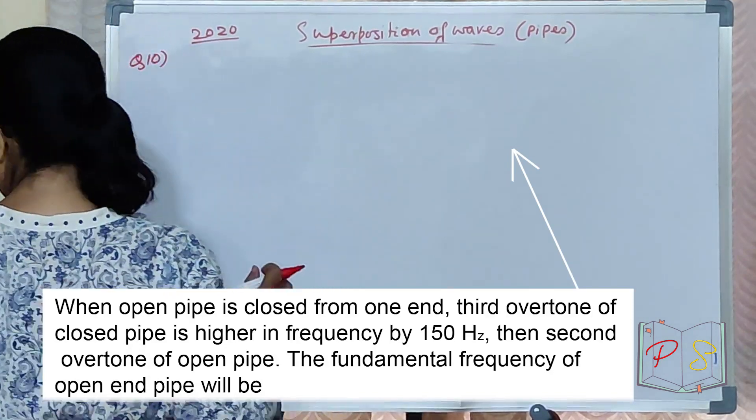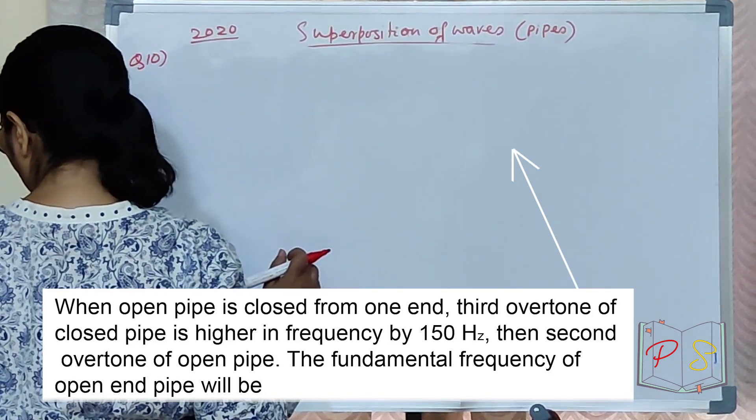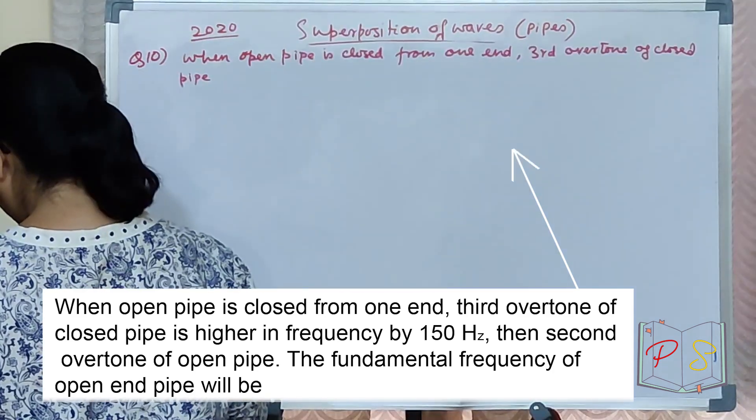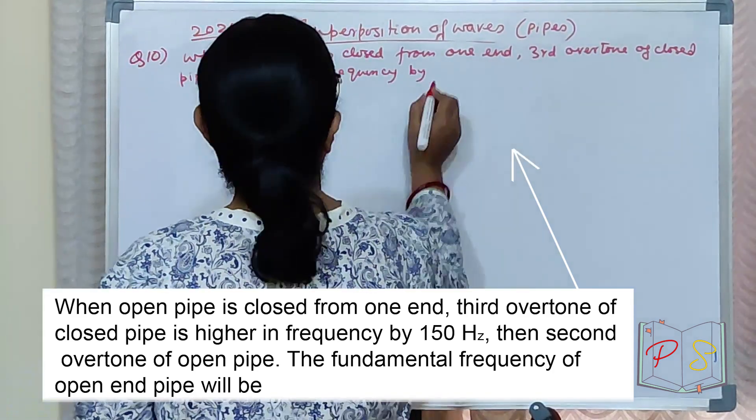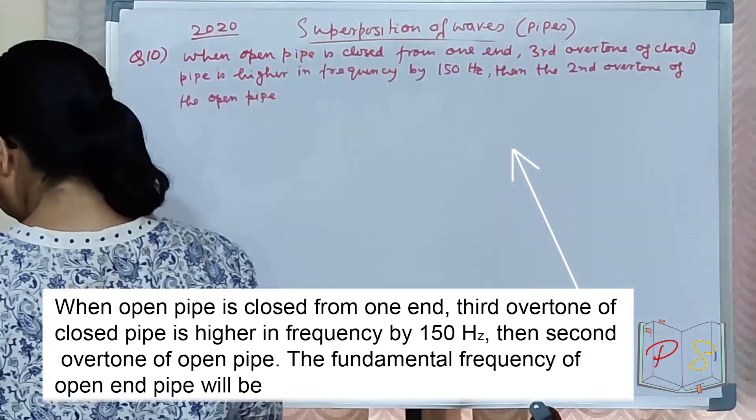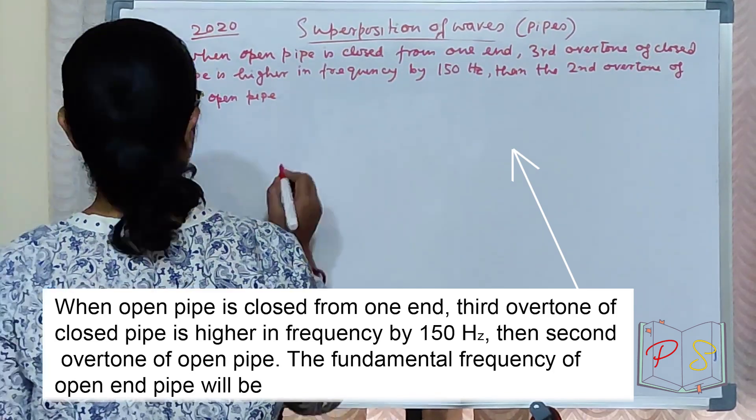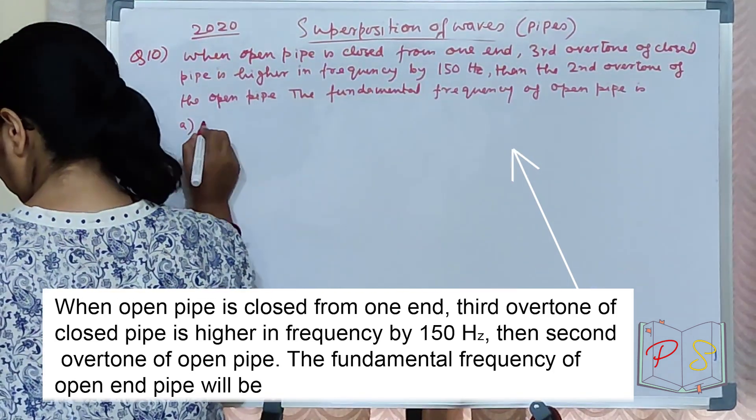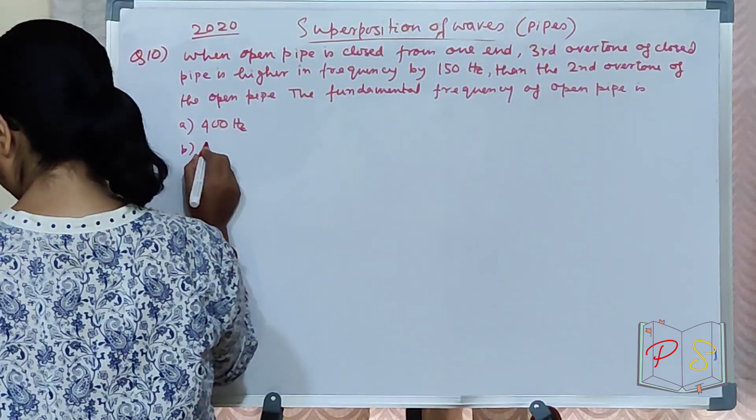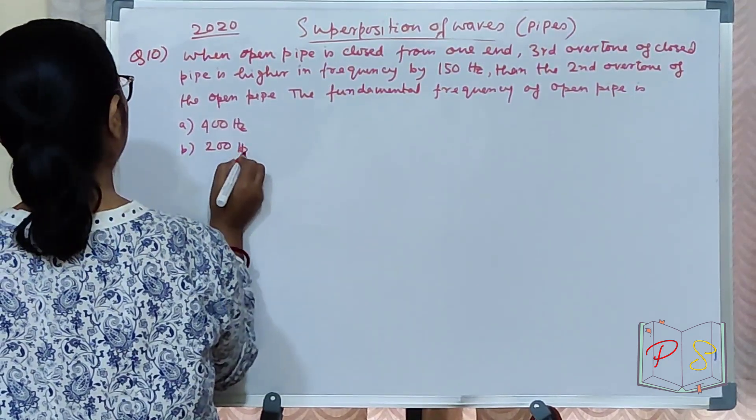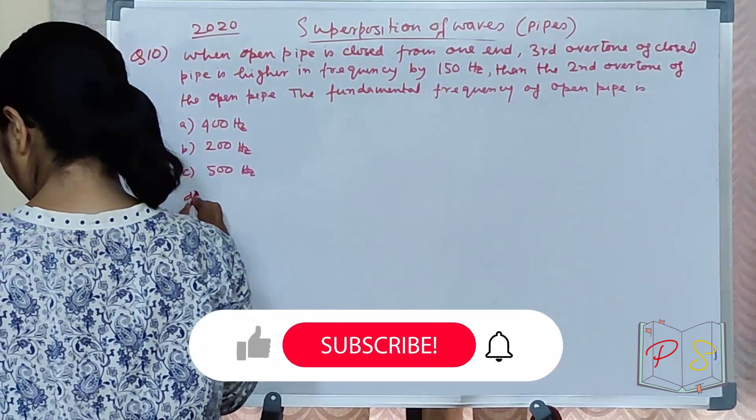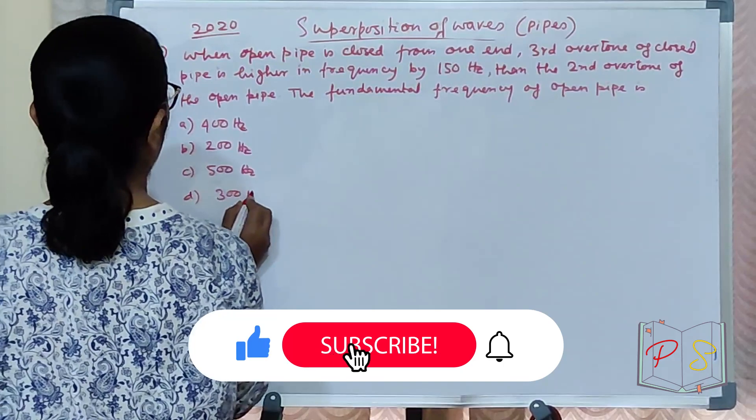When an open pipe is closed from one end, the third overtone of the closed pipe is higher in frequency by 150 Hz than the second overtone of the open pipe. The fundamental frequency of the open pipe will be - what are your options? A) 400 Hz, B) 200 Hz, C) 500 Hz, and D) 300 Hz.